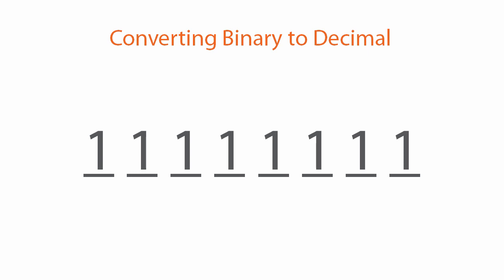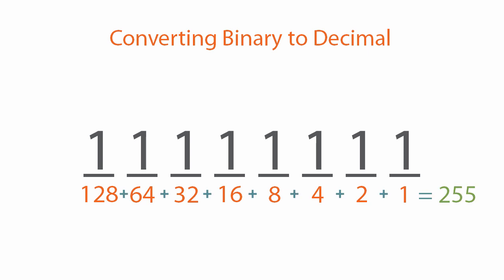The first thing we need to do is mark the place values. Next, we look at each bit that is set to 1 and add up all the place values. Since all the bits are set to 1, we do 128 + 64 + 32 + 16 + 8 + 4 + 2 + 1, which equals 255.